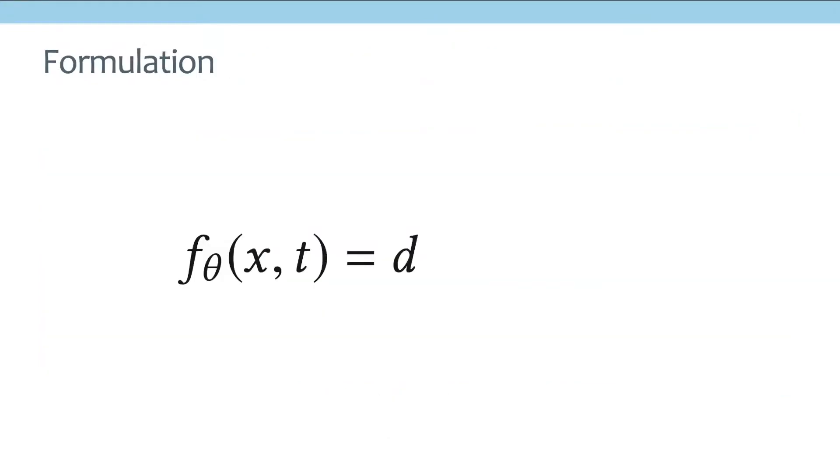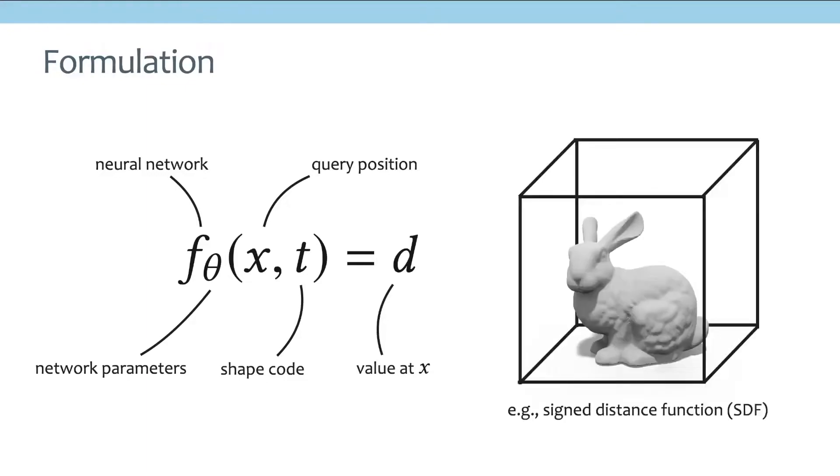More concretely, in this talk, we are going to use f to represent our neural network with network parameters theta. And this network takes two inputs, one is the query location in 2D or 3D, and an additional scalar or vector to represent the code or latent code of each shape. And the output of this network is going to be an implicit function value at location x.